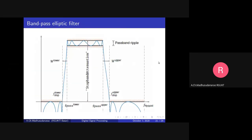Now let's look at the band pass filter. This is an elliptic filter design, which has ripples in both the passband and the stopband. The advantage of the elliptic filter is that you can achieve a very narrow transition band — the transition band is much narrower than that of a Butterworth or Chebyshev filter. This passband extends up to a certain cutoff frequency, and the stopband begins just after the narrow transition band.